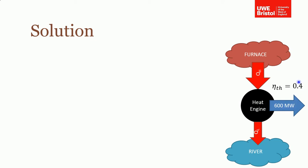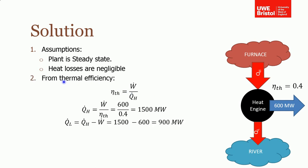The assumptions are that the plant is steady state and heat losses are negligible. From the thermal efficiency, which is the net work we want to get out over the heat that we have to put in, QH, we can find QH. If we rearrange, QH equals work over the thermal efficiency, so QH is 1500 megawatts.